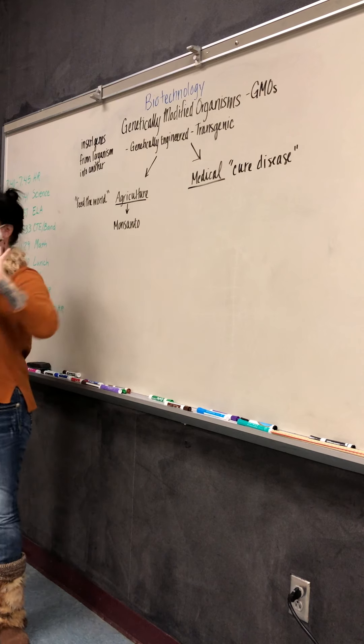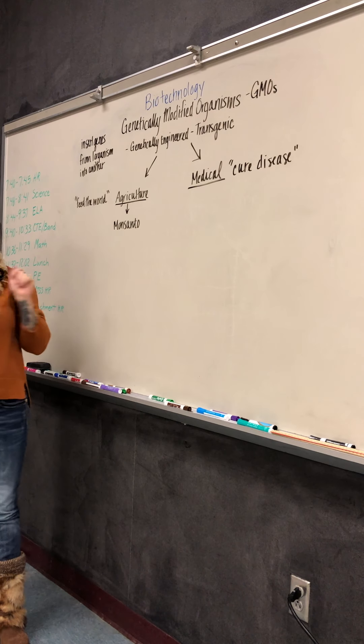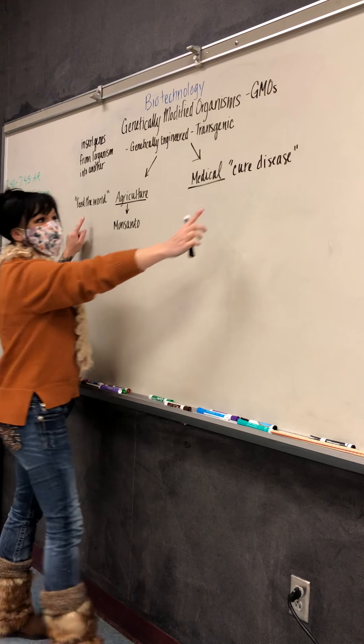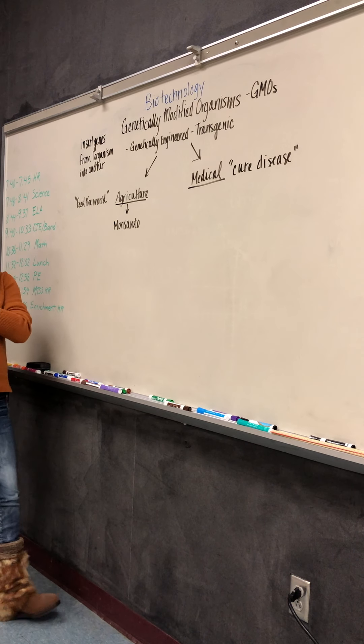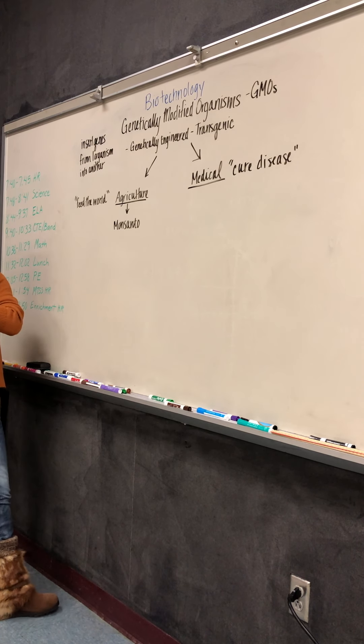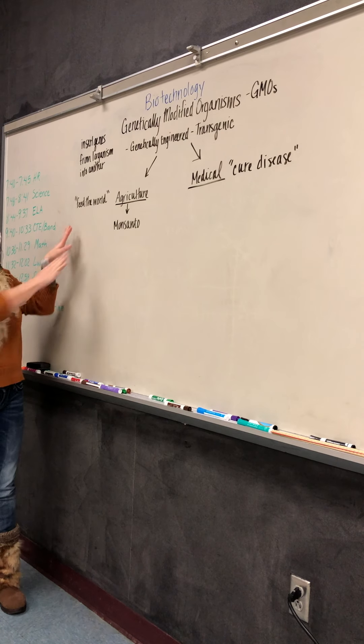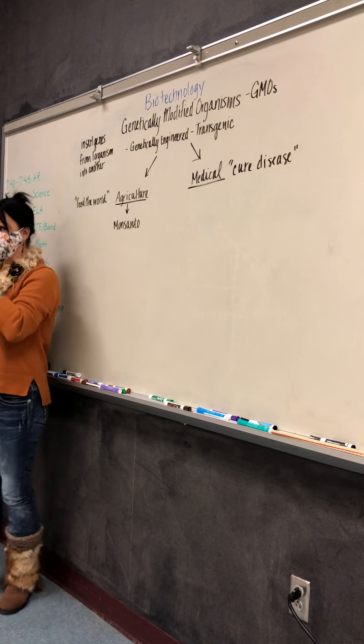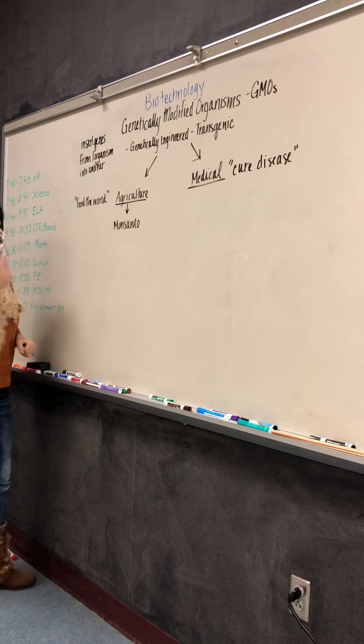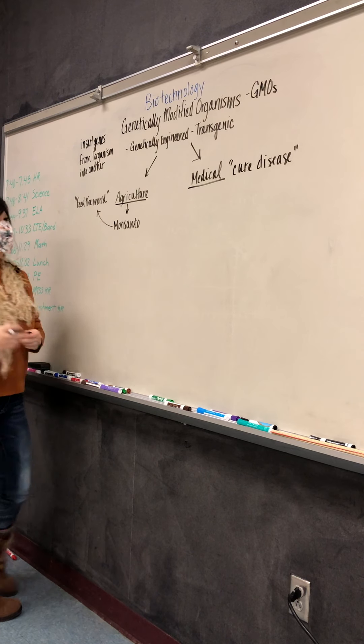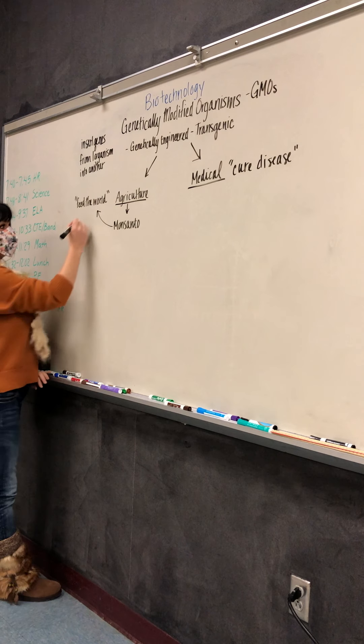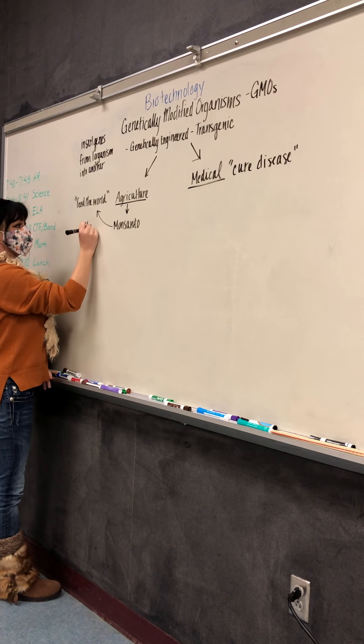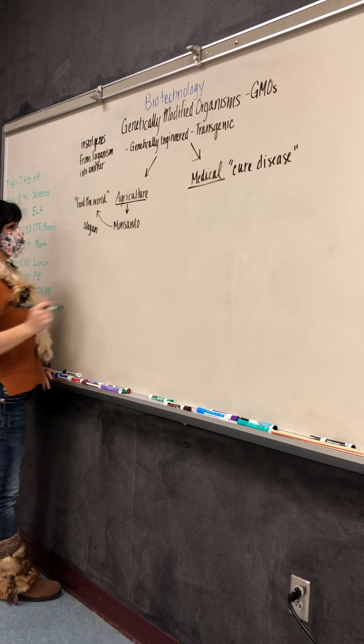So they kind of have these little key terms. And on your test, you'll see these little key terms for anything that's genetically modified. So if it's agriculture, it's talking something about feeding the world. That's actually a slogan that the company that does the most genetic modification uses. So that's their slogan. And that company is called Monsanto.